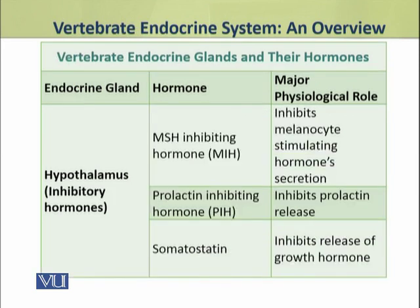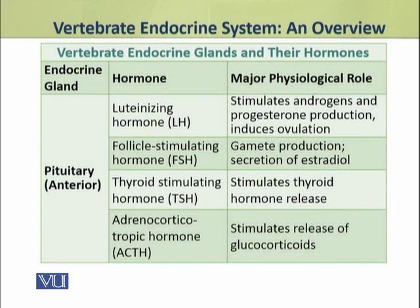The hypothalamic inhibitory hormones include three hormones: MSH inhibiting hormone (MIH), prolactin inhibiting hormone, and somatostatin. These hormones inhibit the secretion of hormones from the anterior pituitary. The hormones which are inhibited include melanocyte stimulating hormone, prolactin, and growth hormone.